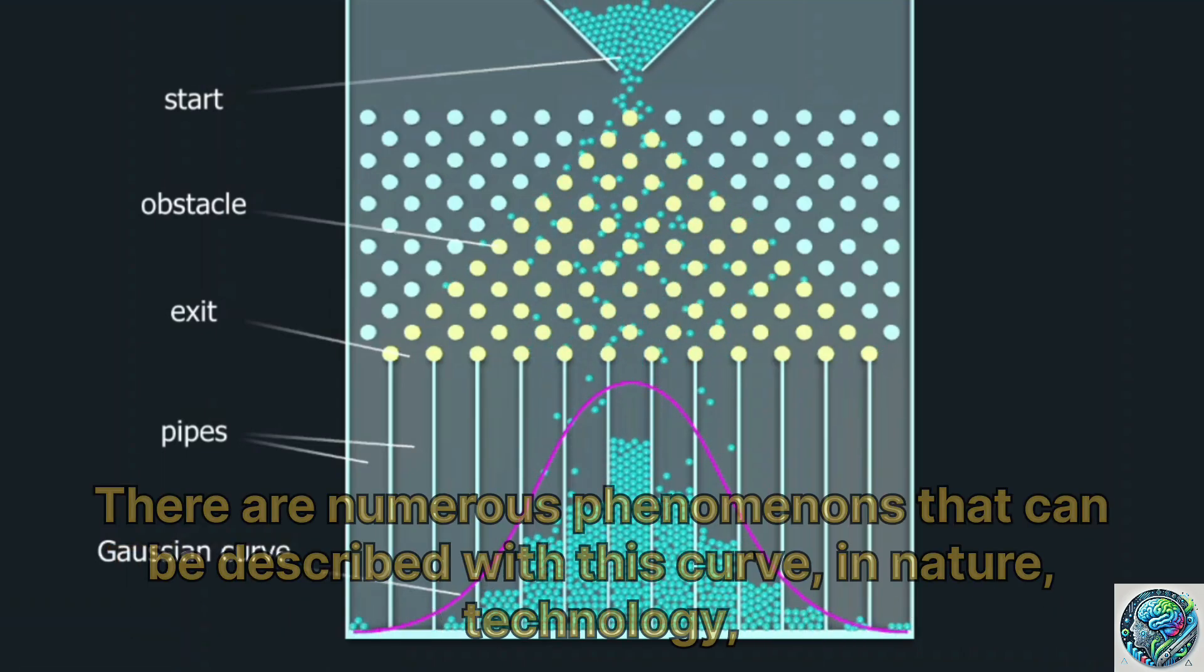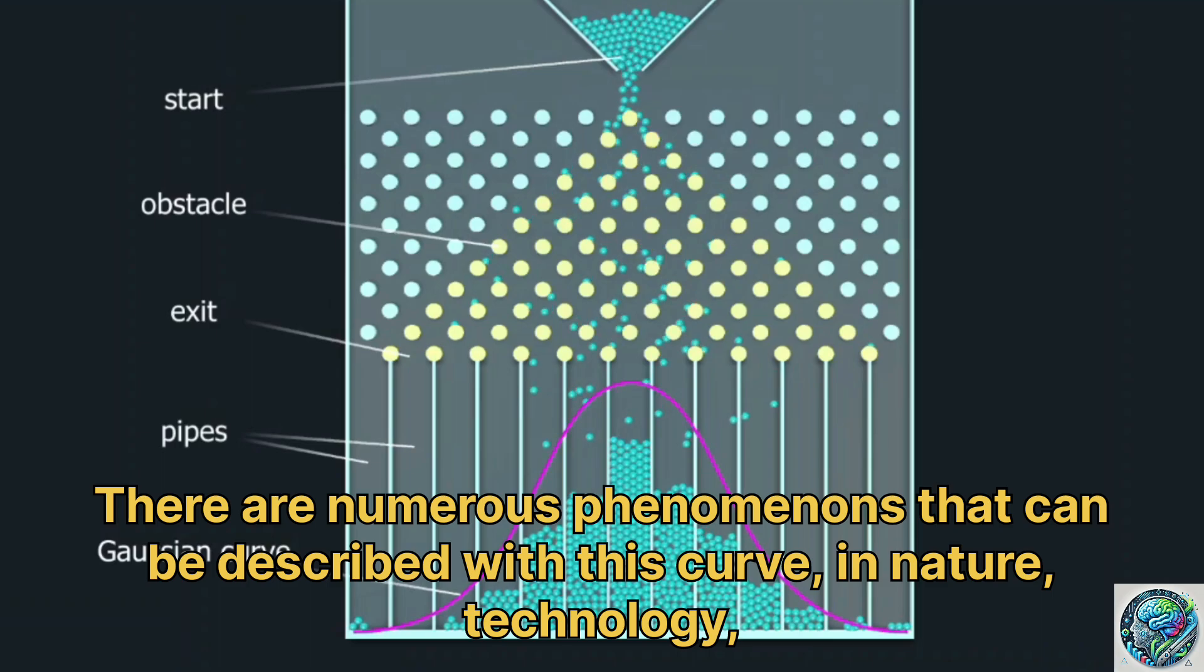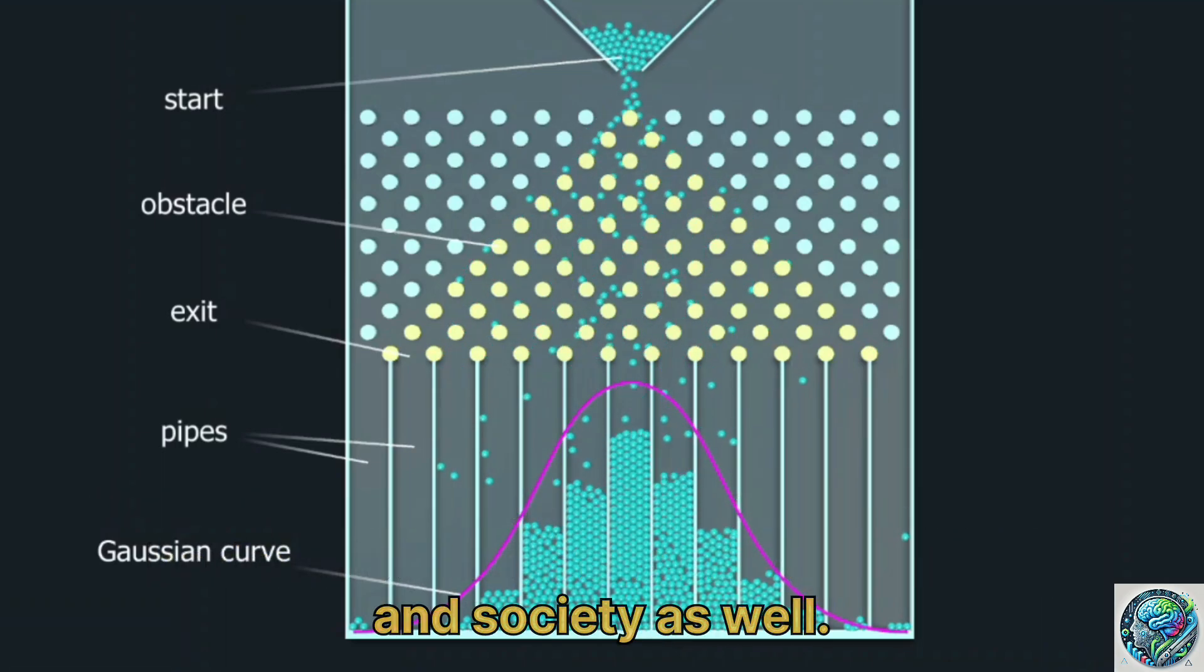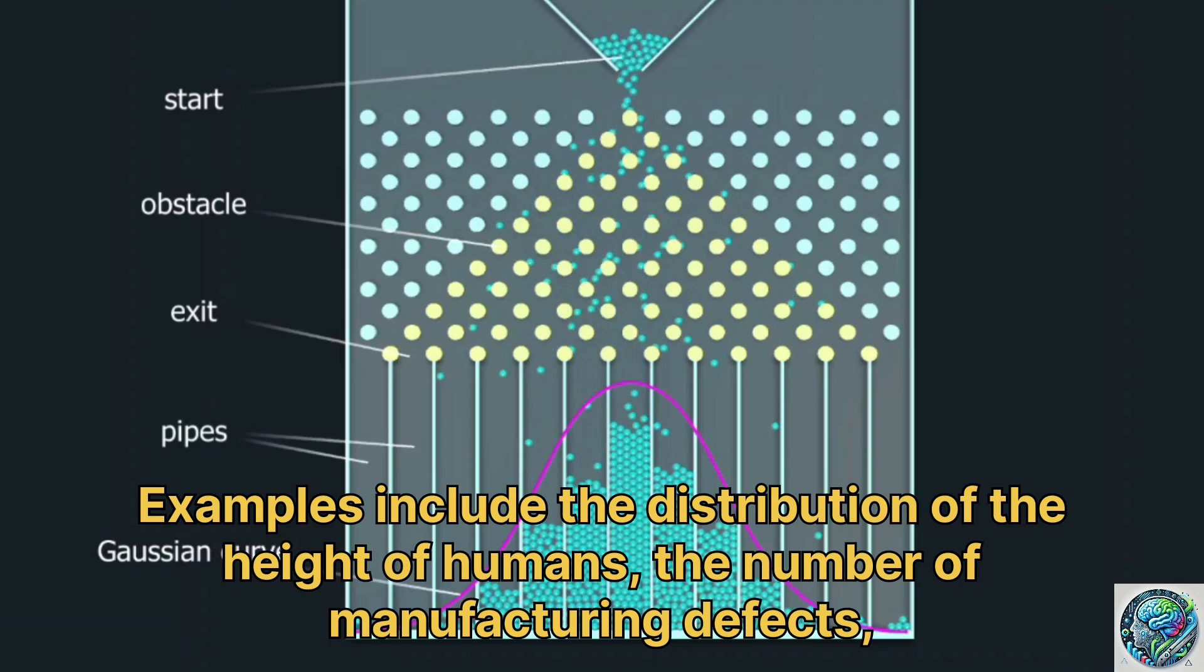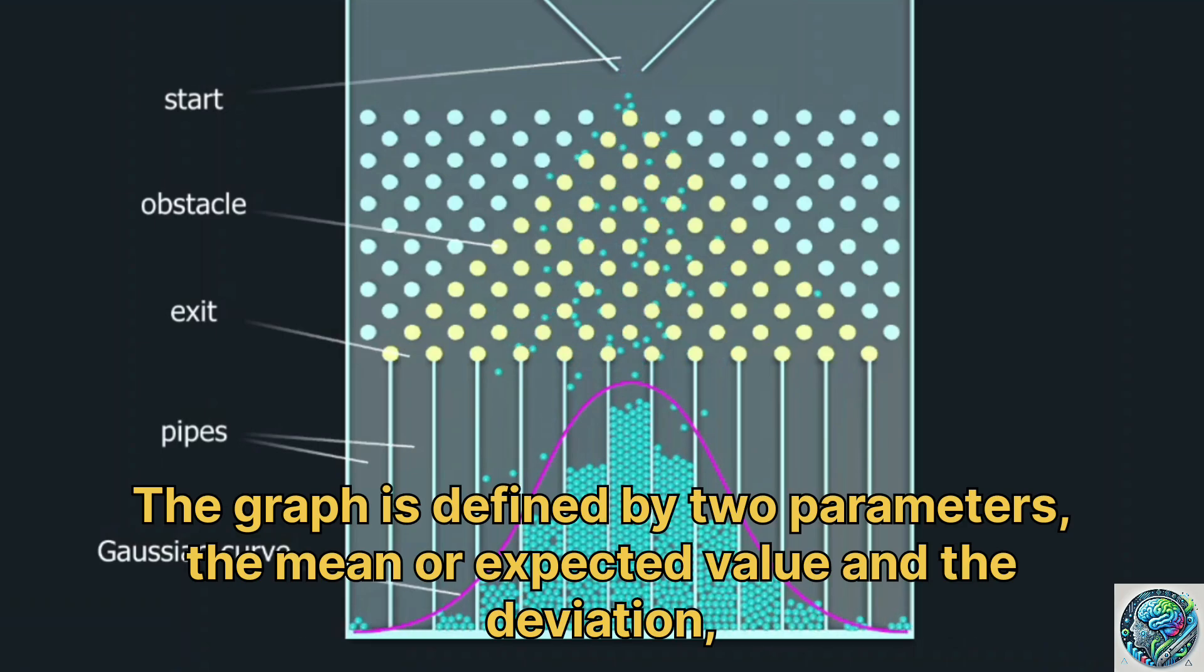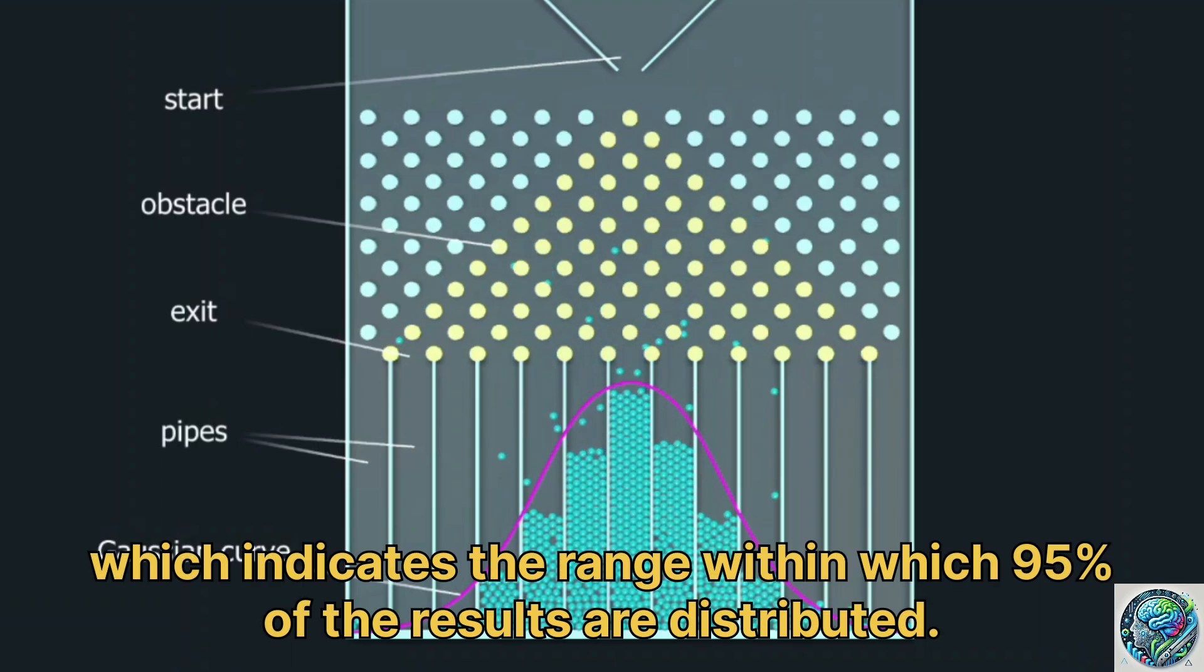There are numerous phenomena that can be described with this curve, in nature, technology, and society as well. Examples include the distribution of the height of humans, the number of manufacturing defects, or the size of apples in orchards. The graph is defined by two parameters, the mean or expected value and the deviation, which indicates the range within which 95% of the results are distributed.